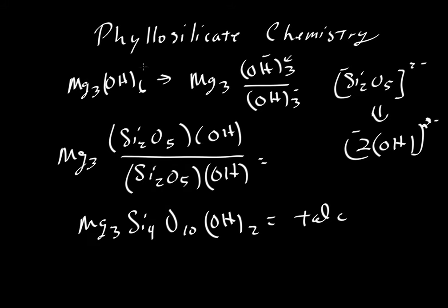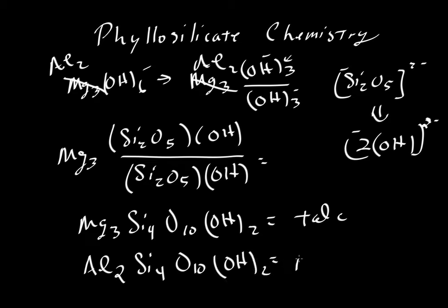We did this by starting out with brucite. If we started out with gibbsite, where instead of three magnesiums, we had two aluminums, we'd have two aluminums here. We'd have a very similar kind of formula, but instead of three magnesiums, we'd have two aluminums. And the rest is the same, Si4O10(OH)2. And this is the mineral pyrophilite.